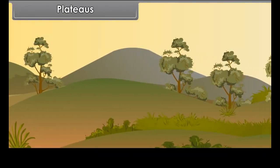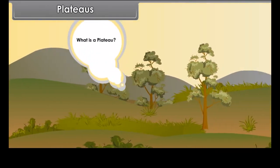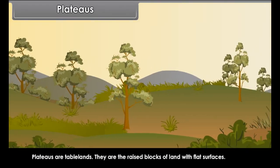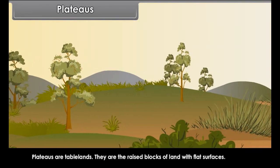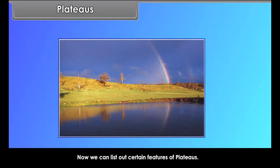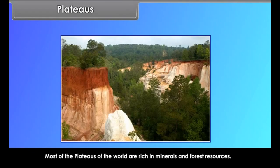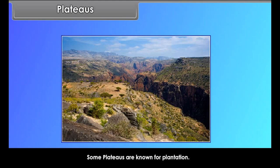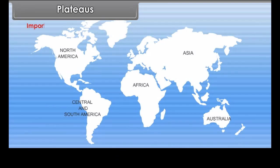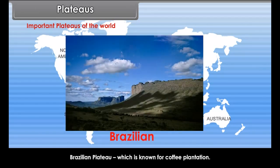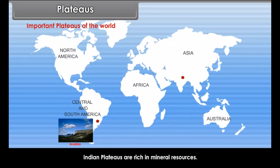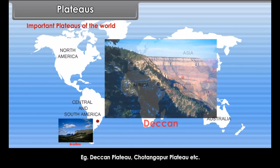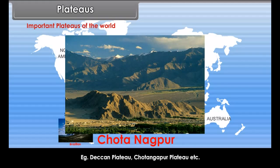Plateaus. The next type of landform is plateaus. What is a plateau? Plateaus are table lands — raised blocks of land with flat surfaces. We can list out certain features of plateaus. Most of the plateaus of the world are rich in minerals and forest resources. Some plateaus are known for plantation. Some of the important plateaus of the world are the Brazilian Plateau, which is known for coffee plantation, and the Indian plateaus which are rich in mineral resources, for example the Deccan Plateau and Chota Nagpur Plateau, etc.